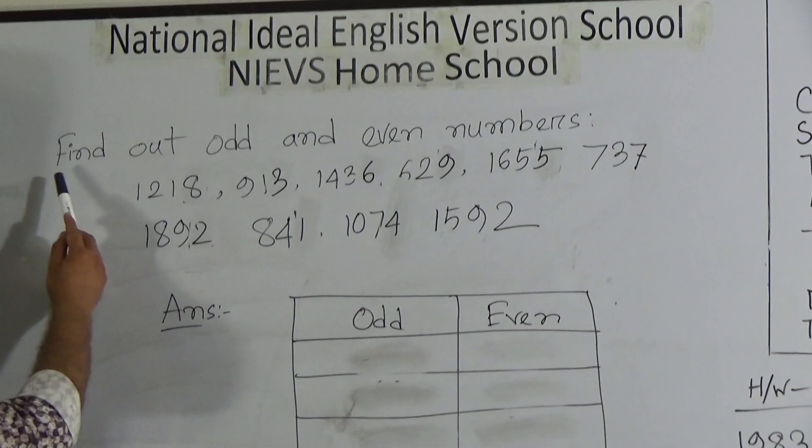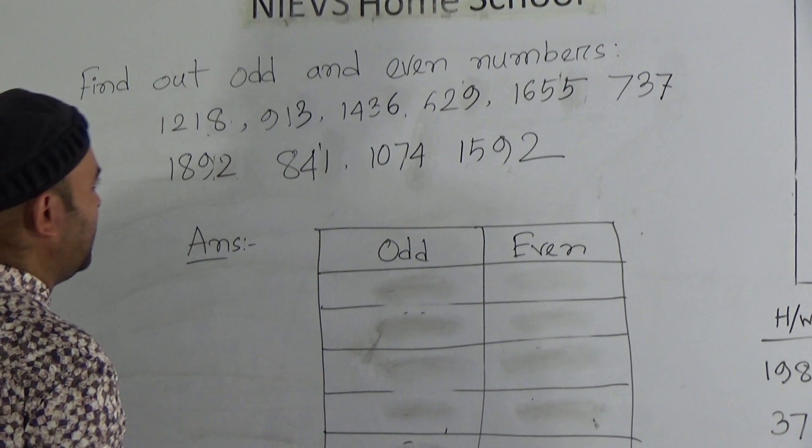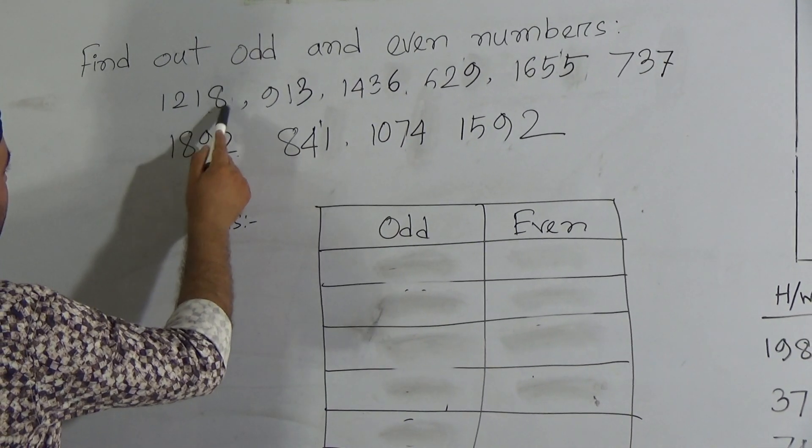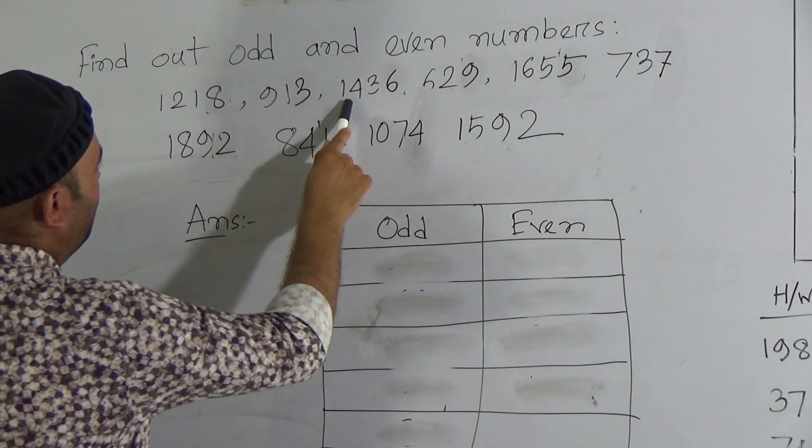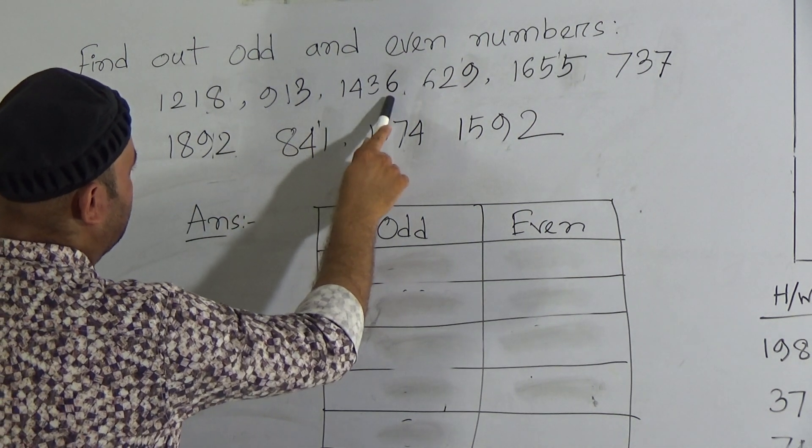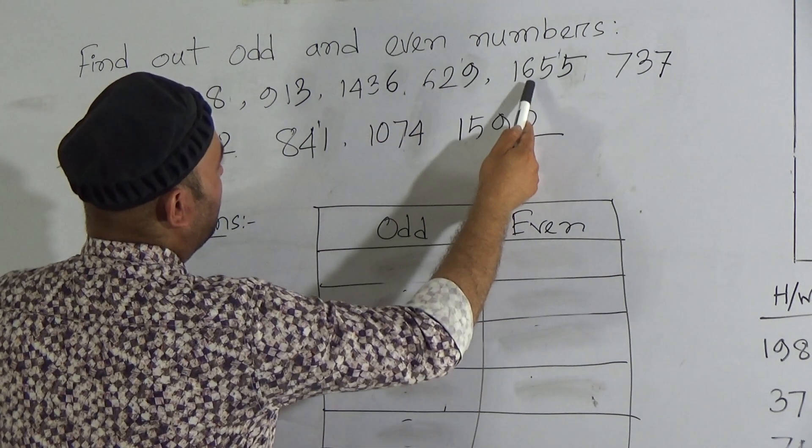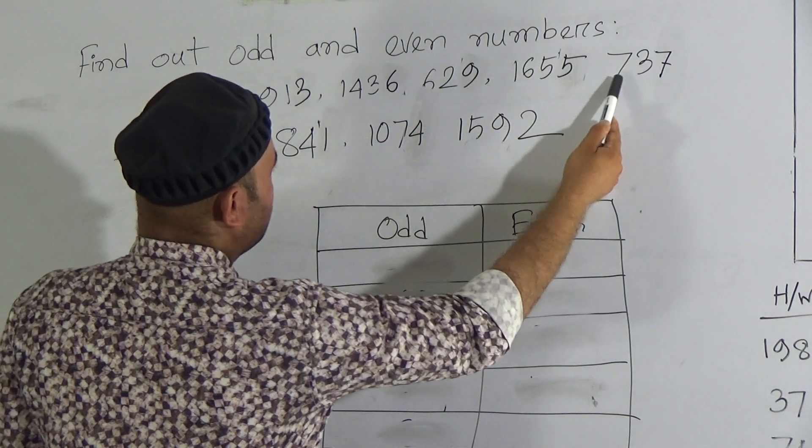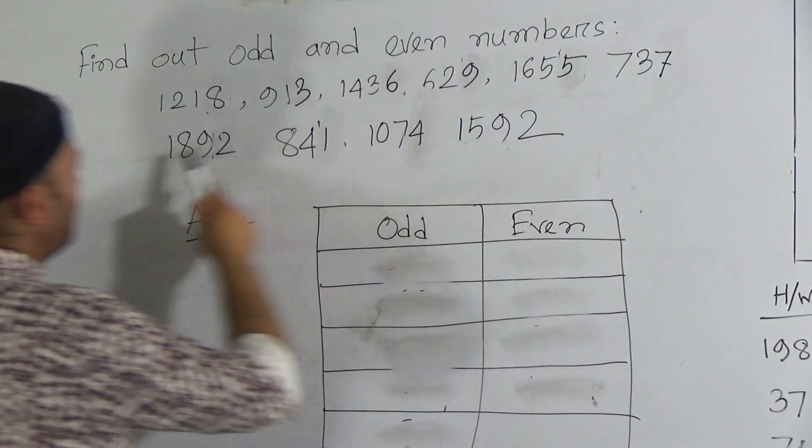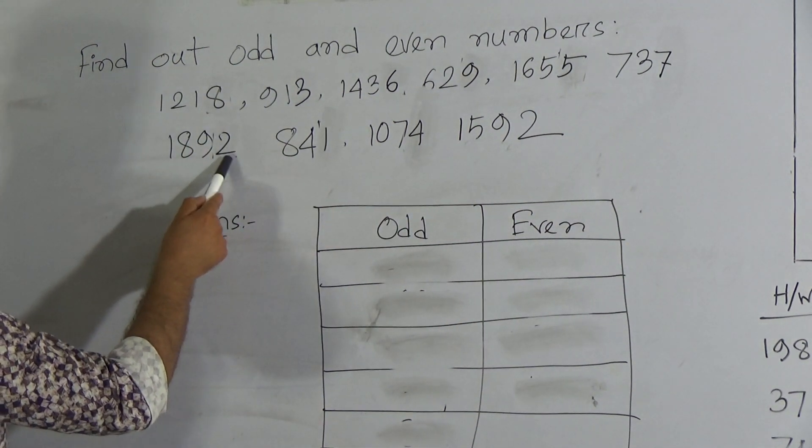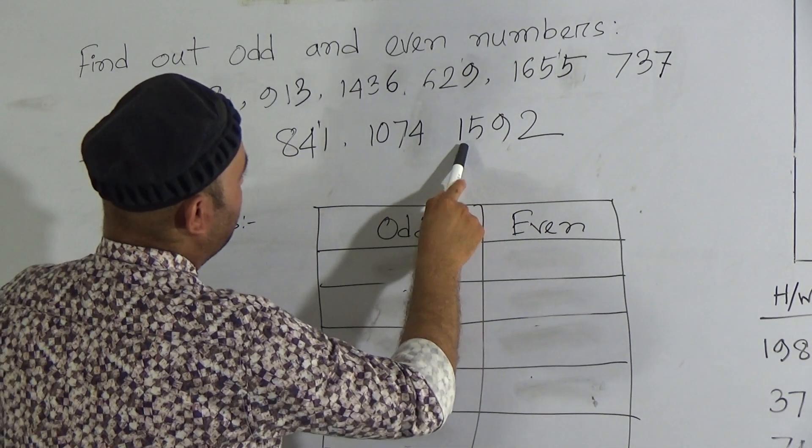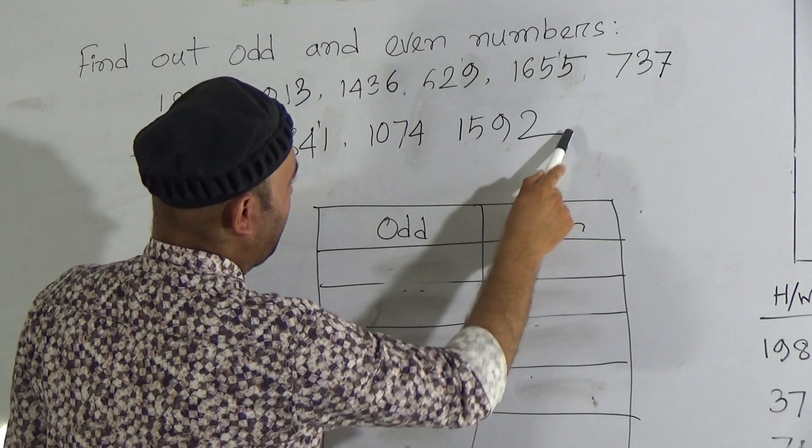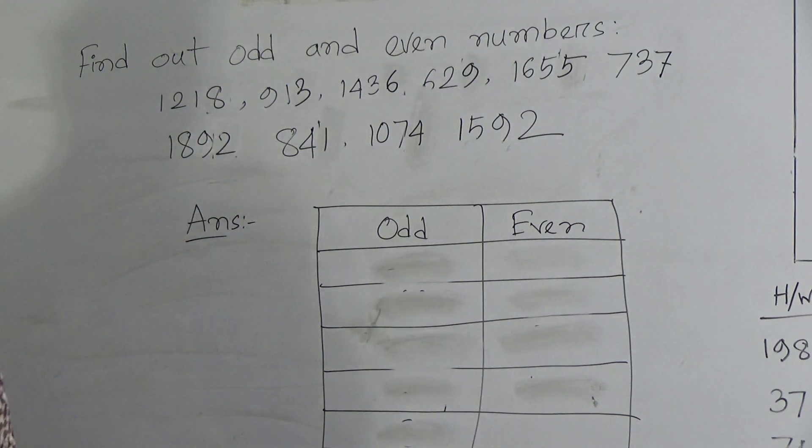Here, the question is find out the odd and even numbers. First number is 1218, 913, 1436, 629, 1655, 737, 1892, 841, 1074. And the last one will be 1592. Now, we have to find out which one is odd and even. Look here.